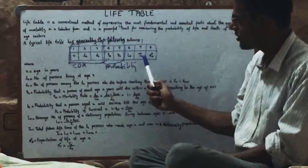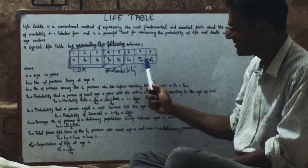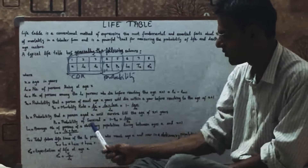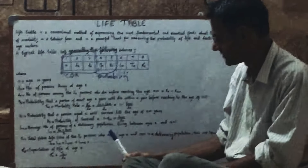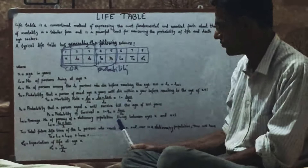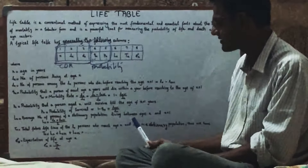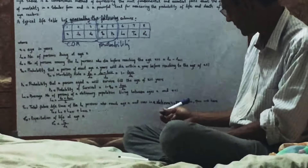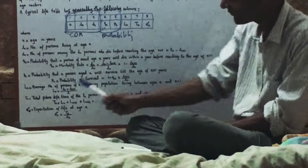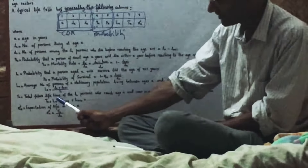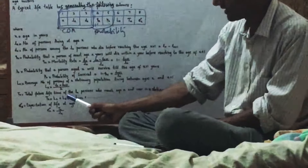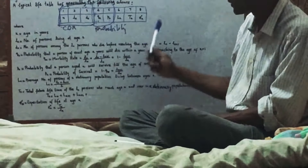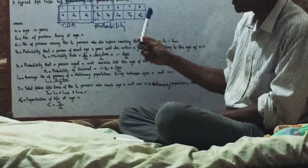The seventh column is TX. TX is the total future lifetime of the LX persons who will reach age X and over in a stationary population. TX is calculated as LX plus LX plus 1 plus LX plus 2, and so on.